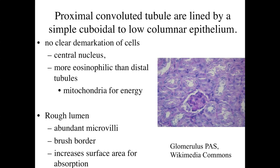Looking at the start of the uriniferous tubules, we see the proximal convoluted tubules - proximal because close to the glomerulus and Bowman's capsule, convoluted because twisted. These are lined by simple cuboidal or low columnar epithelial cells. There's no clear demarcation between cells due to significant interdigitation. Cells have a central nucleus and are more eosinophilic than the distal tubules. With electron microscopy, we see abundant mitochondria within these cells - needed for ATP production to power ion pumping.